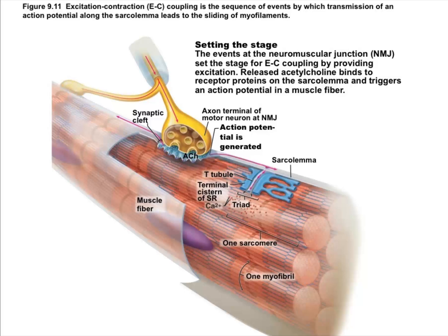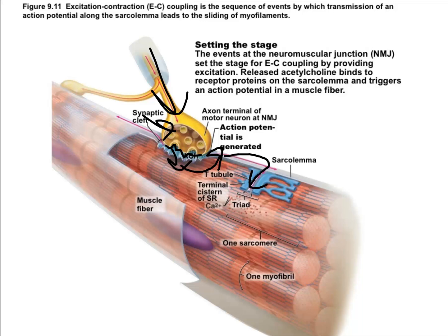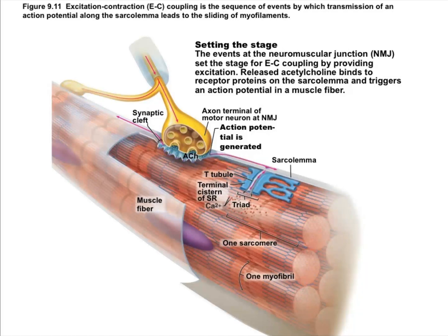A quick recap of the full chain: action potential → calcium flows into the axon terminal → acetylcholine released into the neuromuscular junction → opens ligand-gated ion channels → sodium in → graded potential → if high enough, triggers an action potential → action potential goes down T tubules → opens voltage-gated calcium channels in the sarcoplasmic reticulum → calcium flows out of the SR and into the muscle fiber. The next question is: how does calcium actually trigger a response?